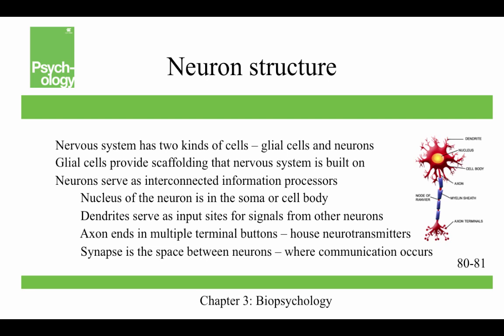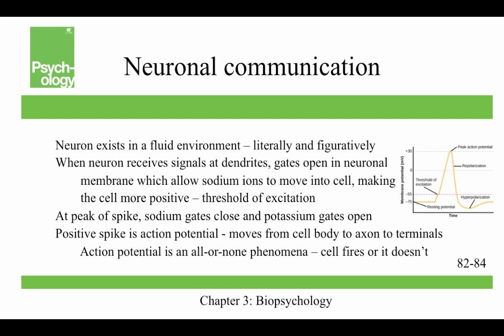The nervous system has two types of cells: glial cells and neurons. Glial cells provide the scaffolding the nervous system is built on, help neurons line up for communication, provide insulation, and transport nutrients while removing waste. Neurons serve as interconnected information processors. The nucleus of the neuron is the soma or cell body. Dendrites serve as input sites for signals from other neurons. The axon ends in multiple terminal buttons, which house neurotransmitters — the chemical messengers of the nervous system. The synapse is the space between neurons where actual communication occurs.